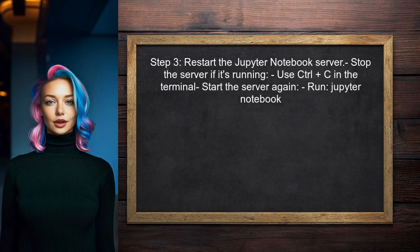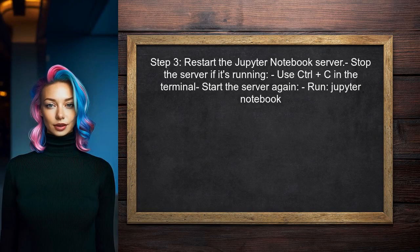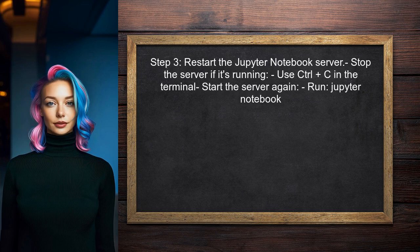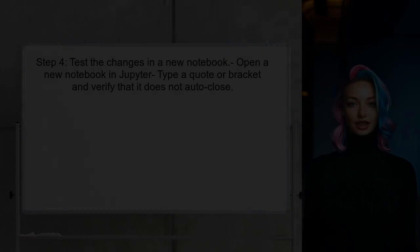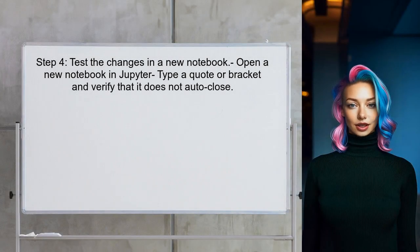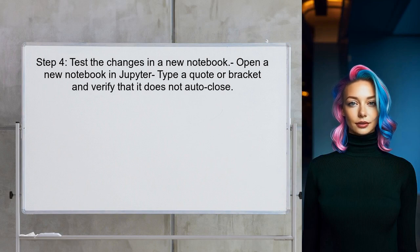After saving the changes to the custom .js file, restart the Jupyter notebook server. This step is crucial for the new settings to take effect. Finally, test the changes by opening a new notebook and check if the auto-closing quotes and brackets are now disabled.